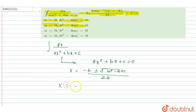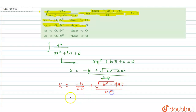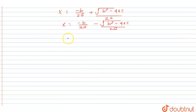Then the value of x can be written as -b/(2a) ± √(b² - 4ac) / (2a). So the quadratic equation can be written in terms of x + b/(2a).